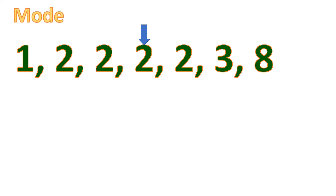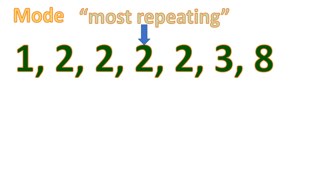We call that the mode. So instead of using mean and median, when there is a mostly repeating dominant number, we use the mode to find the center. Mode is the most repeating number in the data. Mode is denoted by its symbol, and it is just equal to the most repeating number — in this case, it is 2. So the mode is telling you that the center of the data set is the most repeating number, which is 2.